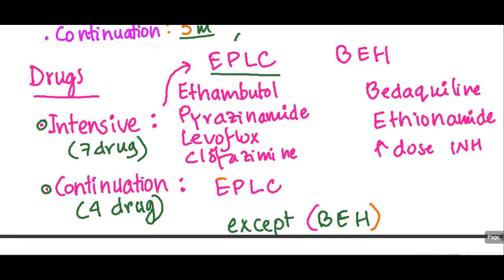The four main drugs or four pillars which will be continued in the continuation phase, not only intensive but also continuation phase. And the BEH, which is only given in the intensive phase. So what are included in the EPLC? For E, ethambutol. For P, pyrazinamide. For L, levofloxacin. For C, clofazimine.